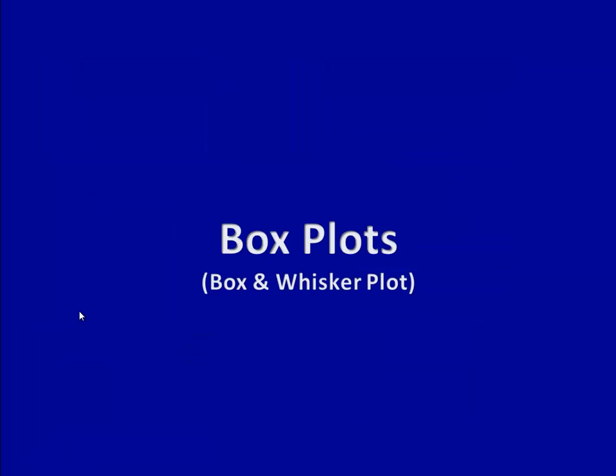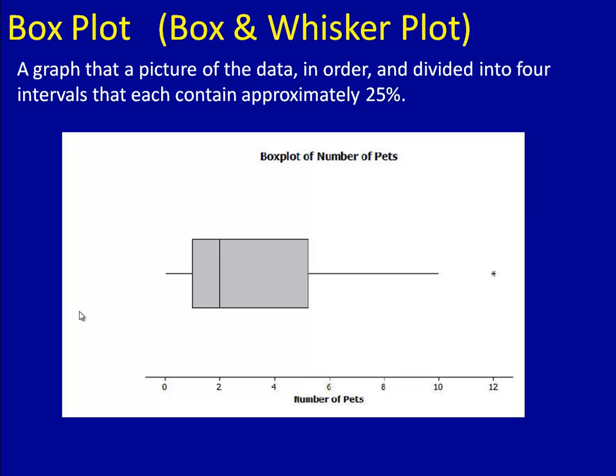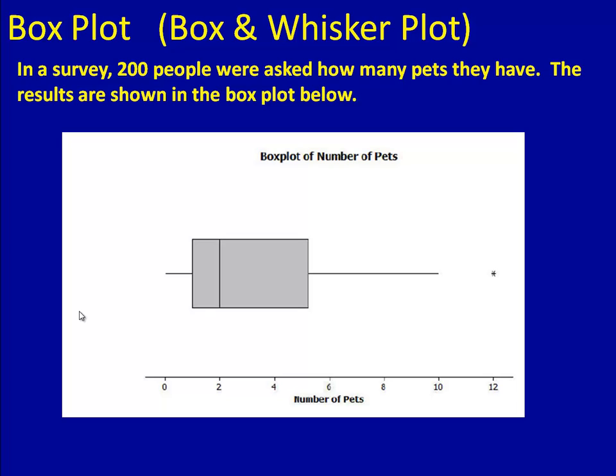Let's end today's lesson by looking at the box plot. A box plot is sometimes called a box and whisker plot. It breaks down the data into intervals that are about 25% each. Today, you're just going to learn how to read a basic box plot. We'll learn how to work with them and how to analyze them and create them in a future lesson. In a survey, 200 people were asked how many pets they have. The results were compiled and created in this box plot. Each piece of this box plot contains 25% of the data.